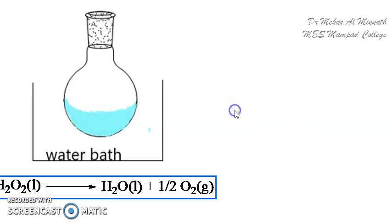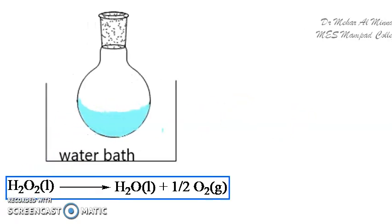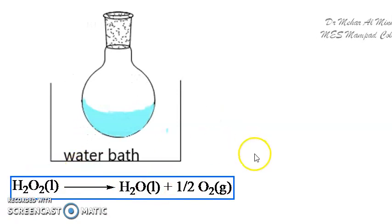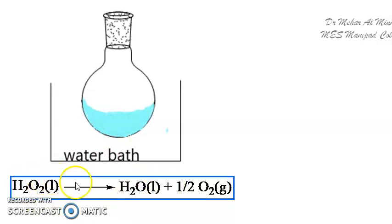The reaction mixture will contain hydrogen peroxide, water, and oxygen as time passes, but initially at time zero it will contain only hydrogen peroxide. As time passes, the reaction mixture will have both hydrogen peroxide and water, but the amount of hydrogen peroxide will be decreasing as it gets converted to water and oxygen.